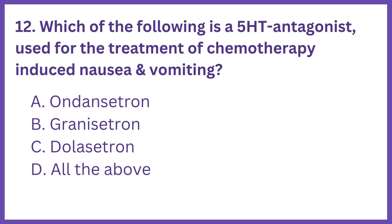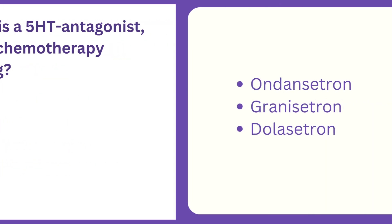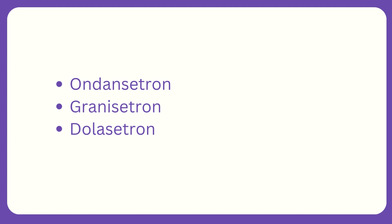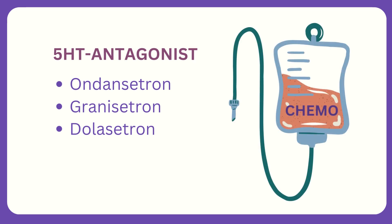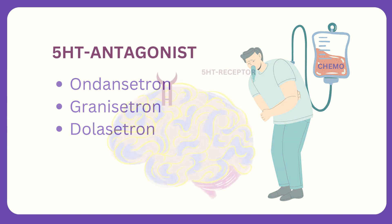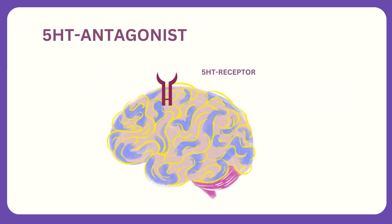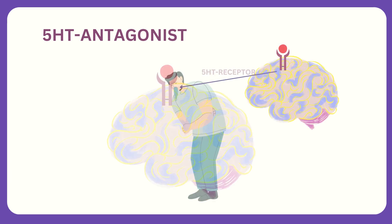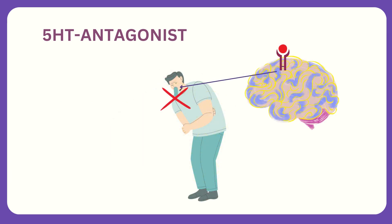Ondansetron, granicetron, and dolacitrin are all examples of 5-HT antagonists. These drugs are commonly used for the treatment of chemotherapy-induced nausea and vomiting. 5-HT antagonists work by blocking serotonin 5-HT receptors in the brain and gastrointestinal tract, reducing the signals that trigger nausea and vomiting.